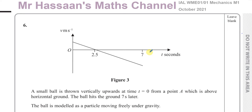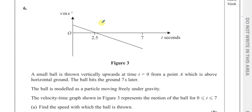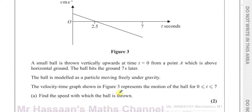Welcome back to Mr. Hassan's Math Channel. This is question number 6 from the International A-Level Edexcel October 2021 Mechanics M1 exam. This question is about a small ball thrown vertically upwards at time t equals 0 from a point A which is above horizontal ground. The ball hits the ground 7 seconds later. The ball is modelled as a particle moving freely under gravity, and the velocity-time graph in Figure 3 represents the motion of the ball from 0 to 7 seconds. Find the speed with which the ball is thrown.